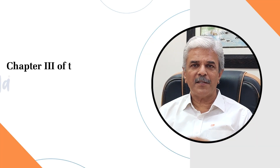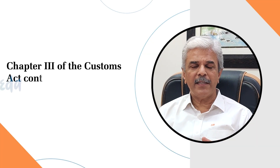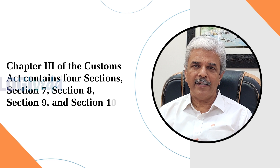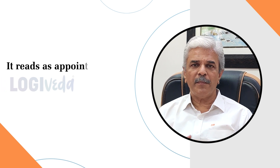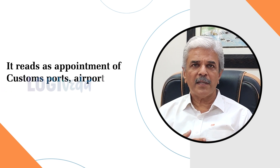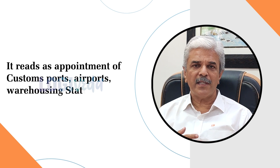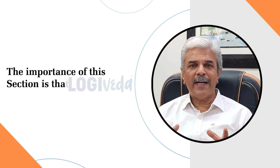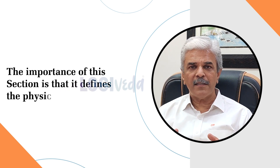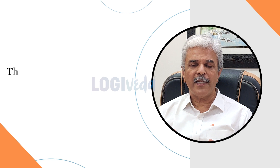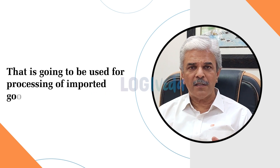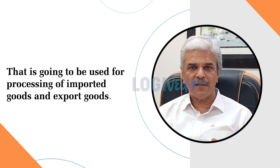Chapter 3 of the Customs Act contains four sections: Section 7, Section 8, Section 9, and Section 10. It reads as appointment of custom ports, airports, warehousing stations, etc. The importance of this chapter is that it defines the physical infrastructure that is going to be used for processing of imported goods and export goods.